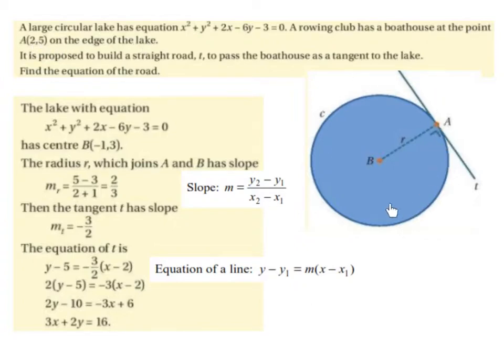So here we have the circular lake, and here we have the point A, which is where we have the boathouse. The circle has the equation x squared plus y squared plus 2x minus 6y minus 3 equals 0.